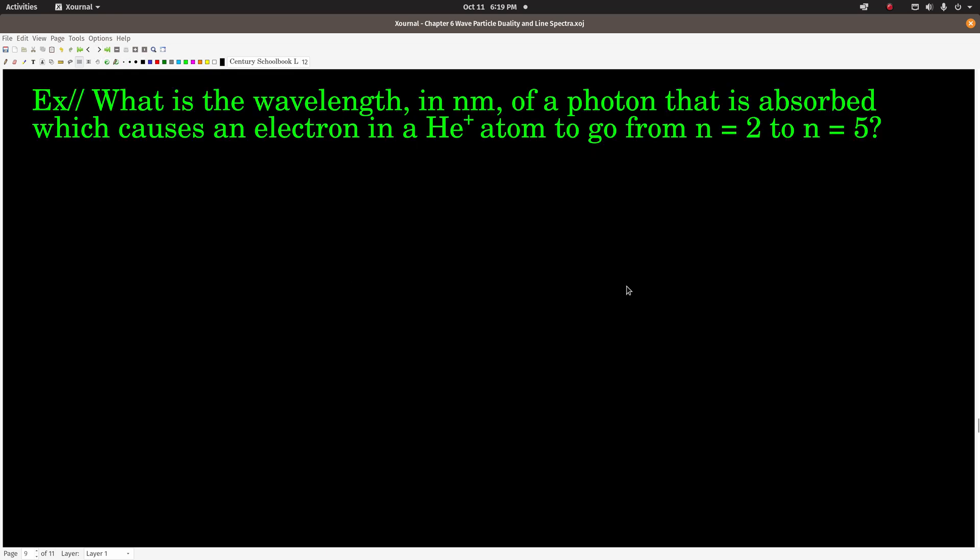So let's do an example. Let's calculate the wavelength in nanometers of a photon that's absorbed. So that means it's going to be annihilated, which causes an electron in the helium plus atom to go from N equals 2 to N equals 5. So it's going from a lower energy to a higher energy. So why don't you guys go ahead and give this a shot and come on back when you get an answer.